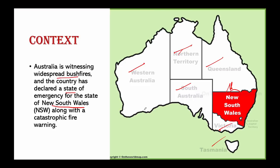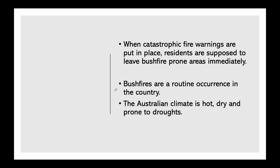Talking about this warning — what does it mean? When catastrophic fire warnings are put in place, residents are supposed to leave bushfire-prone areas immediately. Across New South Wales, over 600 schools were shut down, and the recent bushfires have notably left at least three to five people dead.